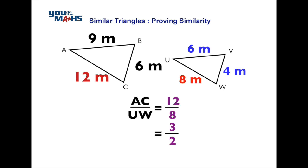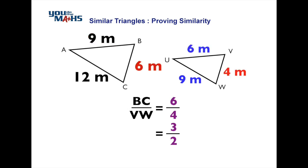12 on the large triangle divided by 8 on the small triangle gives a ratio of 3 over 2, or 1.5. The next longest sides are 9 and 6 — that's also a ratio of 3 over 2. Repeating that process for the remaining sides, 6 divided by 4 also gives a ratio of 3 over 2.